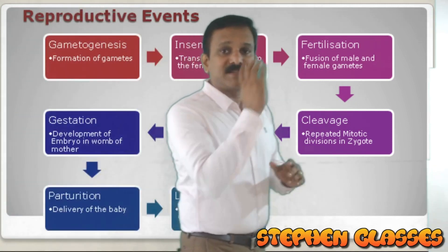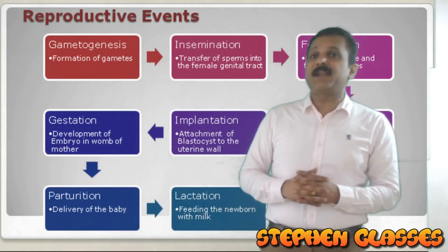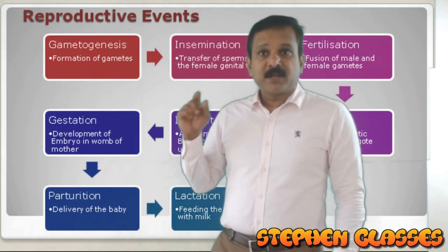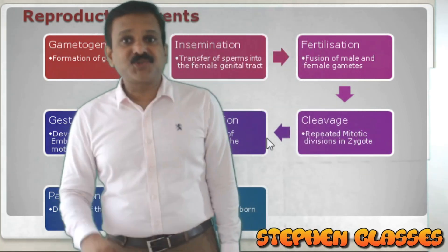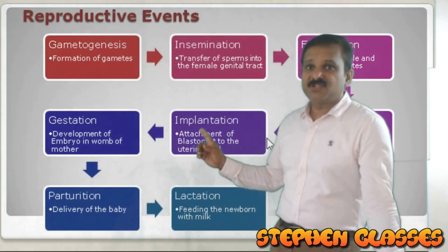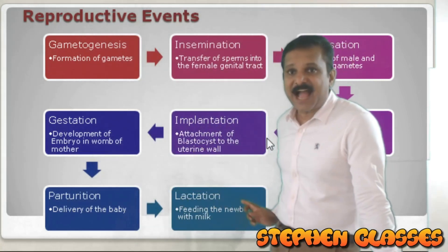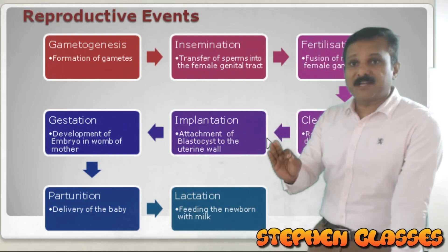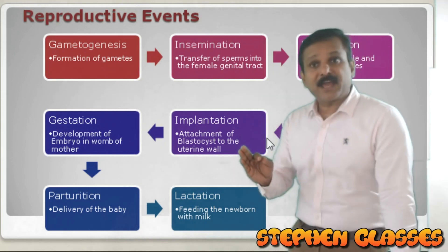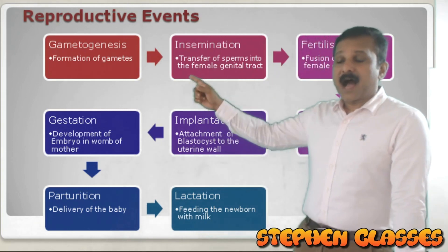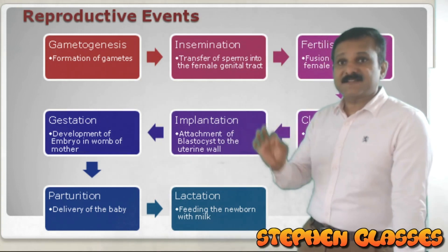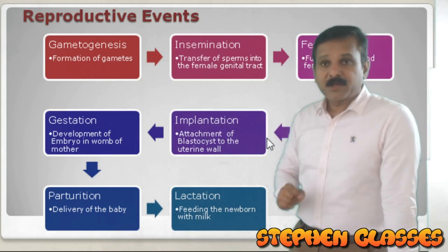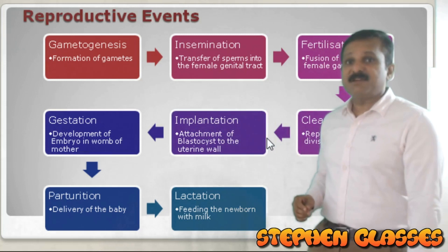So these are the reproductive events of humans: gametogenesis, insemination, fertilization, cleavage, implantation, gestation, parturition, and lactation. These are the important events or steps in human reproduction. Sometimes they will ask you to arrange the reproductive events in the correct sequence, so the sequence is very important.